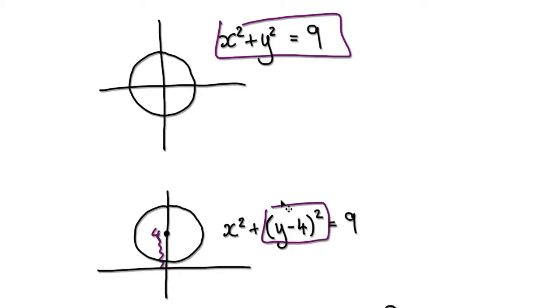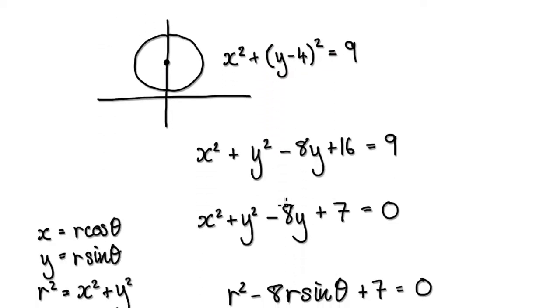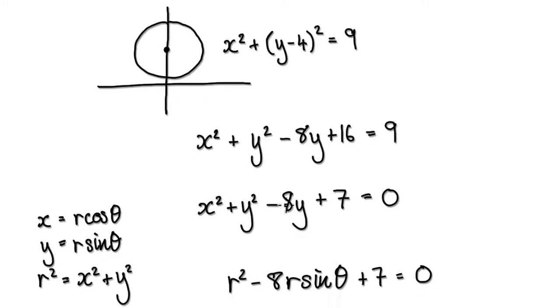Multiply this out. Remember, we're trying to find the equation in polar coordinates, so square this, which gives us this. Then take away 9 from both sides to get 7. Once you're here,